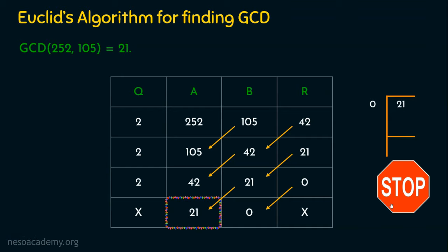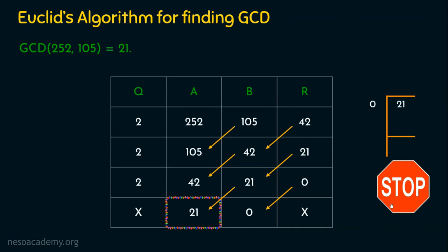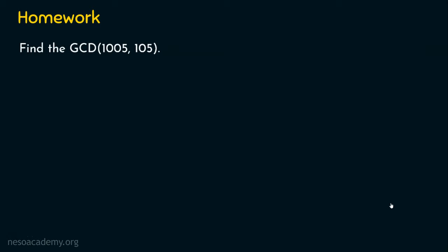Before we sign out, let's see the homework question: find the GCD of 1005 and 105. I request you to solve this problem and post your answers in the comment section. I hope you now understand the working of Euclid's algorithm or Euclidean algorithm to find the GCD or HCF of two numbers. I will meet you in the next presentation — thank you for watching.